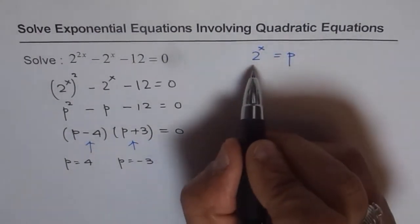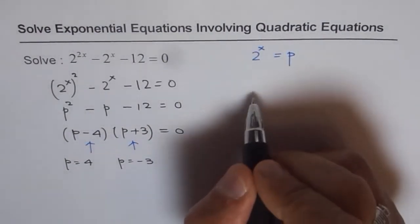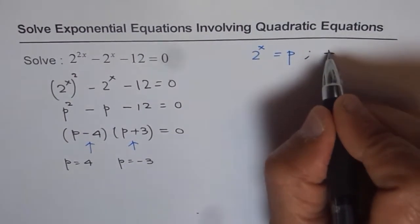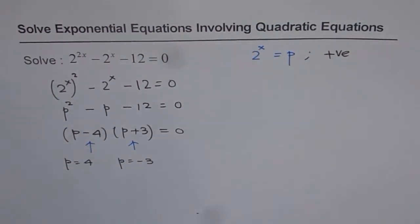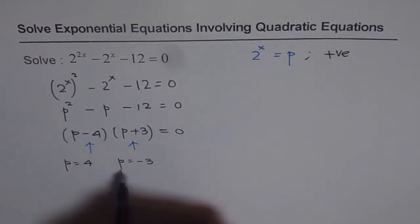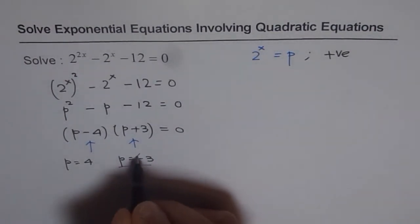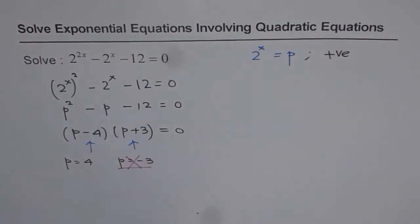Now, you should note that if I write exponential function equals p, that means I am only expecting positive values. It can never be negative. And therefore, p equals minus 3 is not a solution. So this does not provide me with any solution.